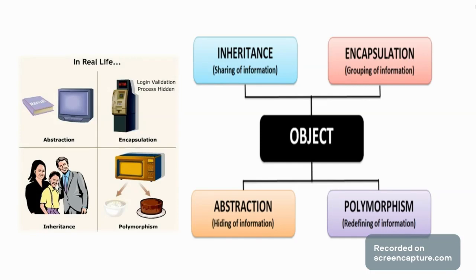Polymorphism is the re-defining of information. You have to define information again. Poly means many and morph means many forms or changes — many forms. You describe each data in a different format. That is basically the polymorphism.